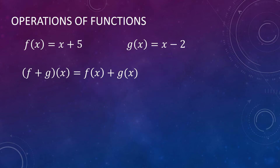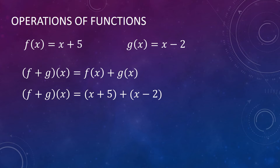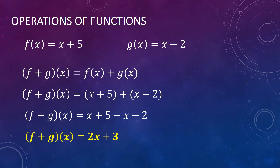Let us now do the operation of functions, specifically the addition of functions. We have f of x equal to x plus 5 and another function g of x equal to x minus 2. Let us get the sum of the functions, so that is f plus g of x, or f of x plus g of x. So f of x plus g of x is simply x plus 5 plus x minus 2. Eliminating the parentheses, nothing changes in terms of signs, so this equals x plus 5 plus x minus 2, giving us f plus g of x equal to 2x plus 3.